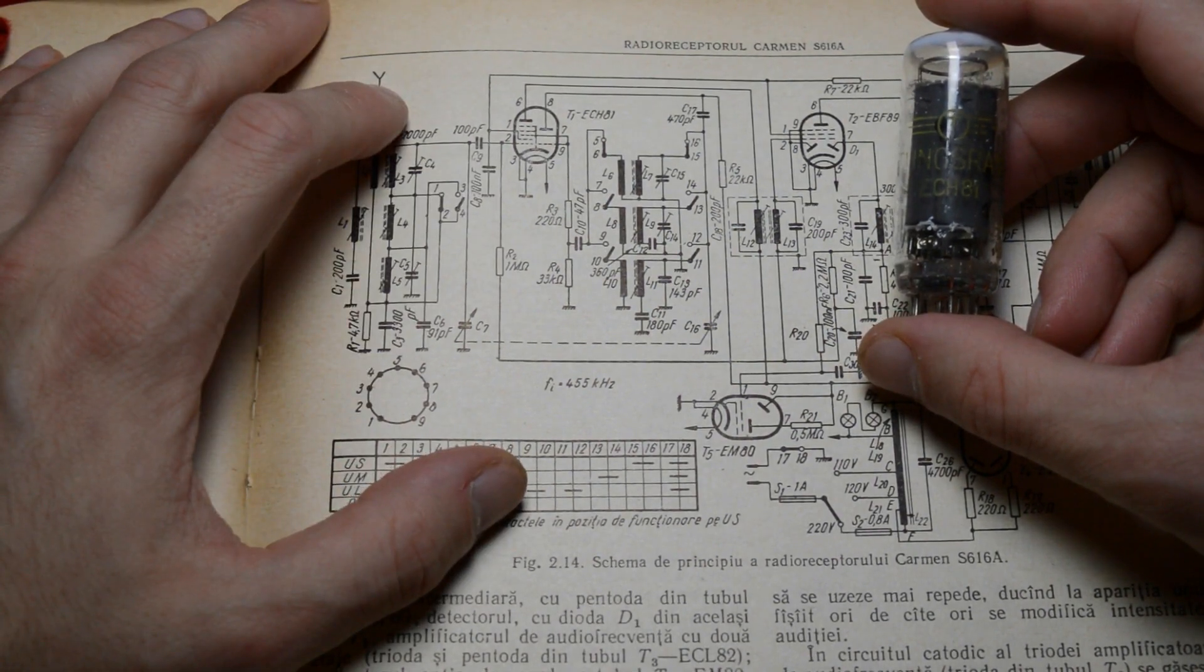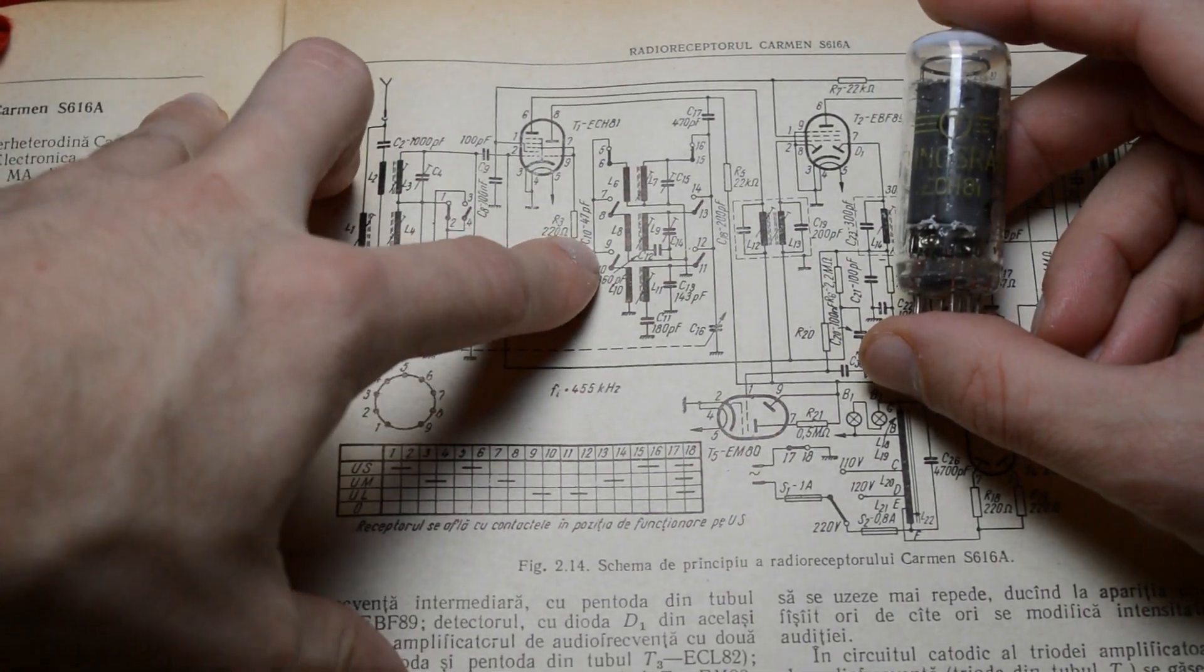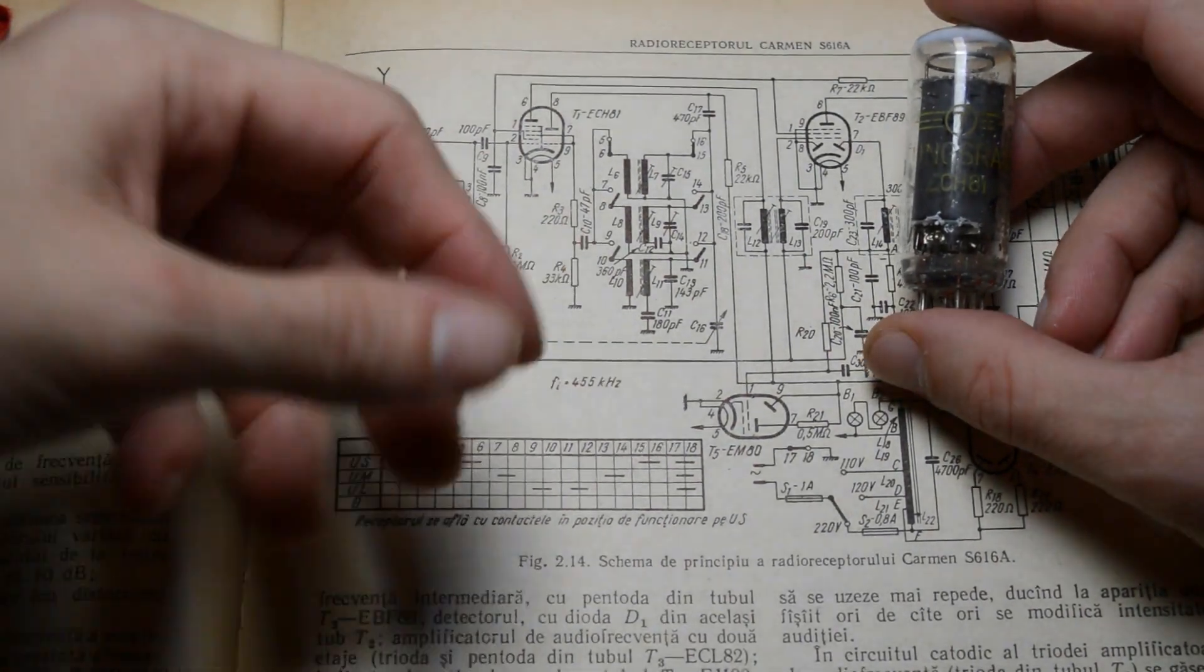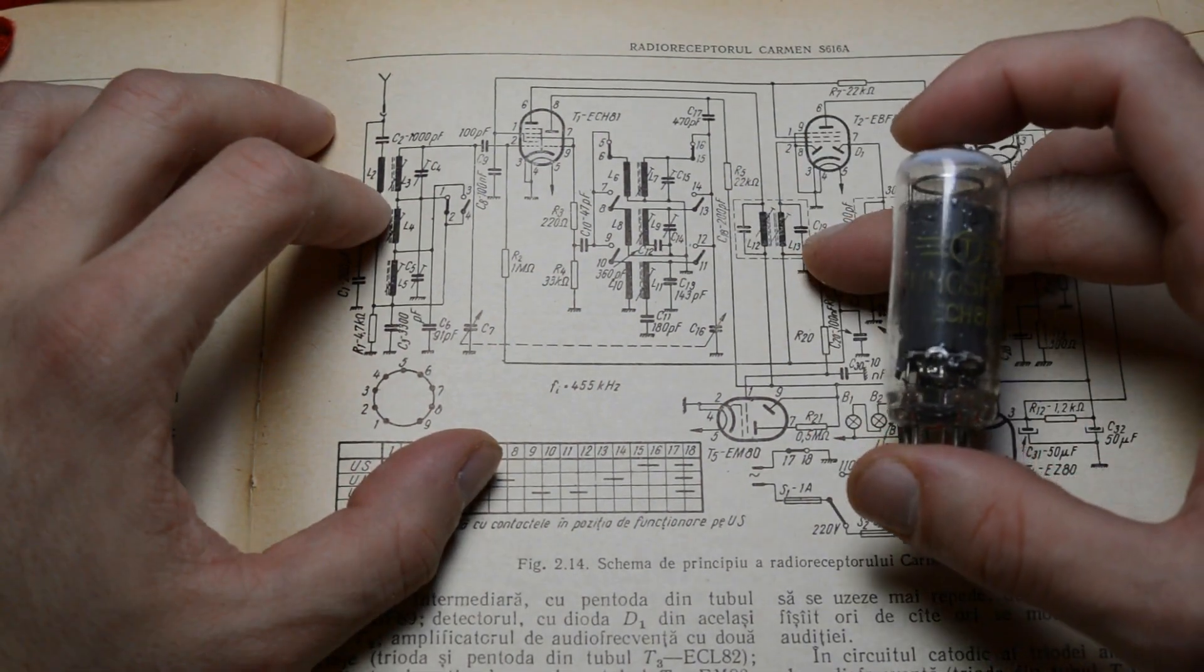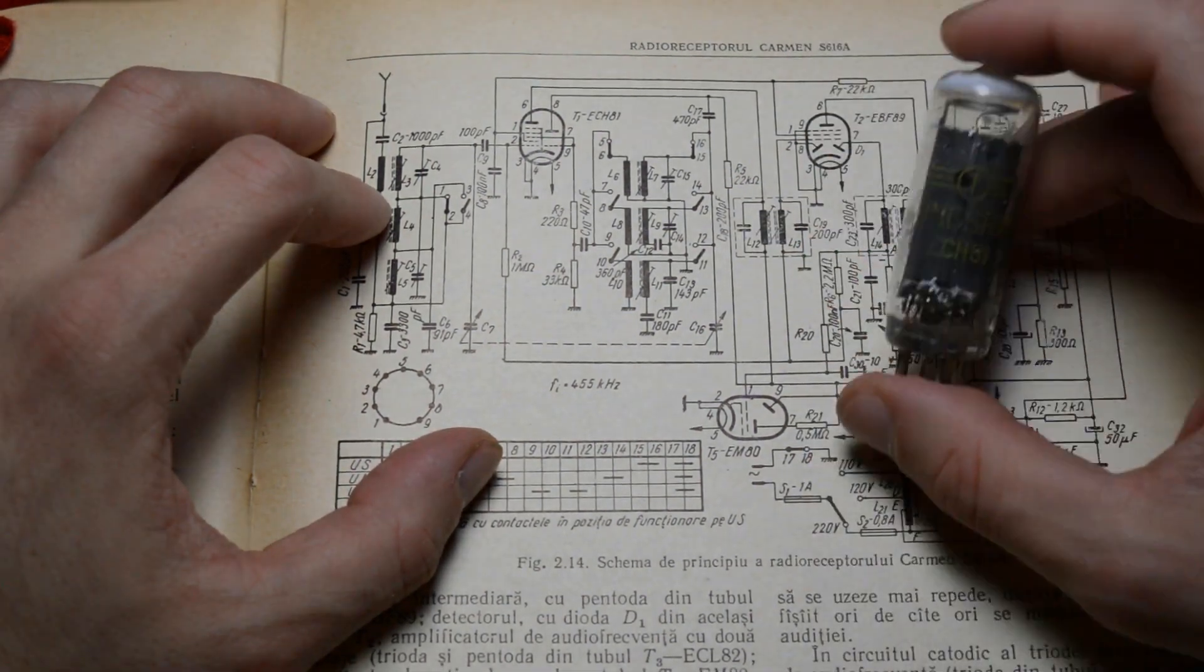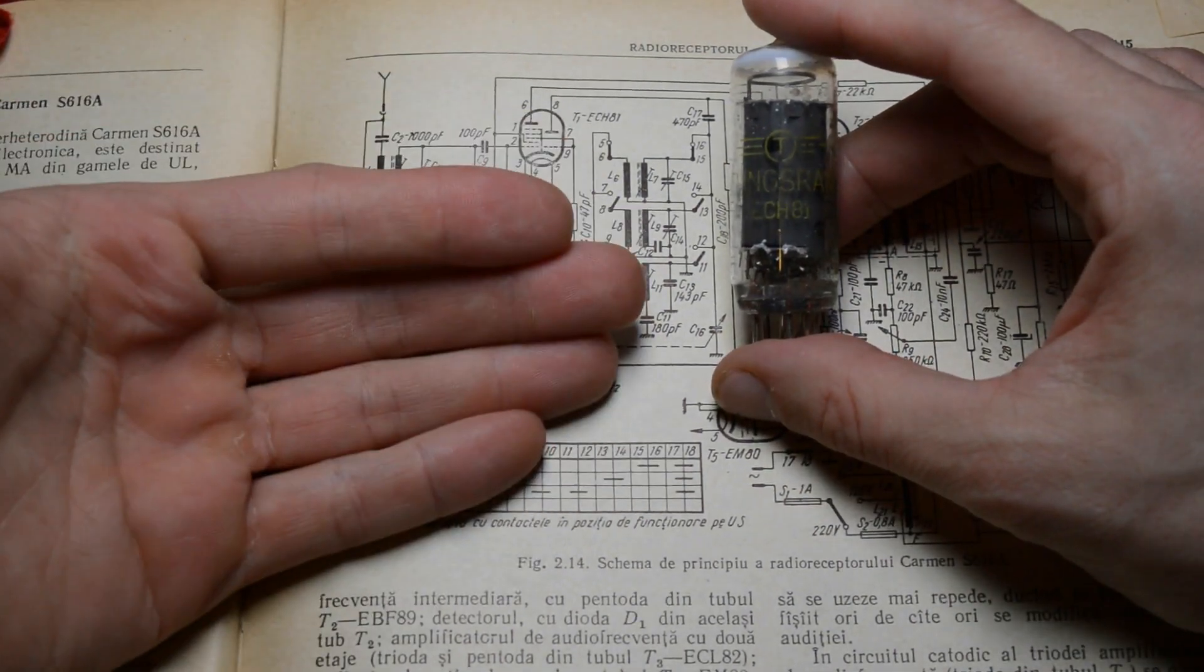This one is responsible for amplifying the antenna signal, combining it with the local oscillator signal, and generating the intermediate frequency, which ends up being filtered by the intermediate frequency transformer. But that's a different discussion. So, first thing, let's take apart this tube.